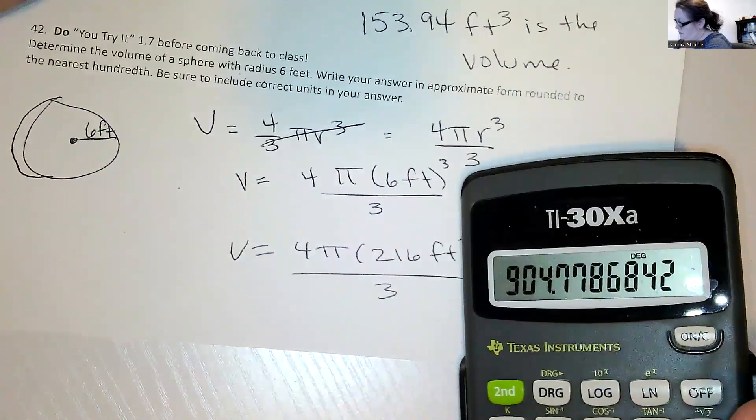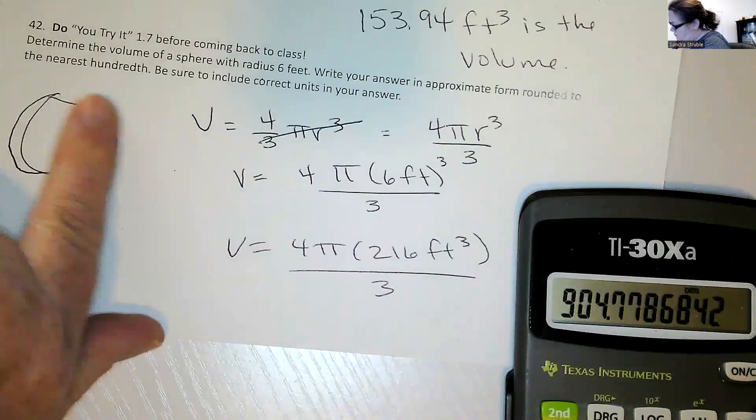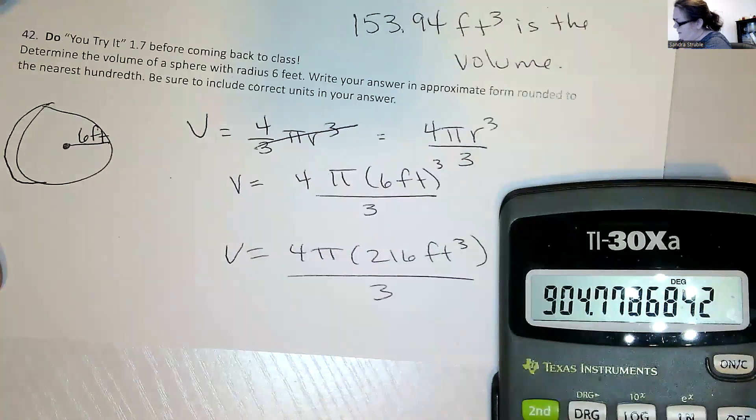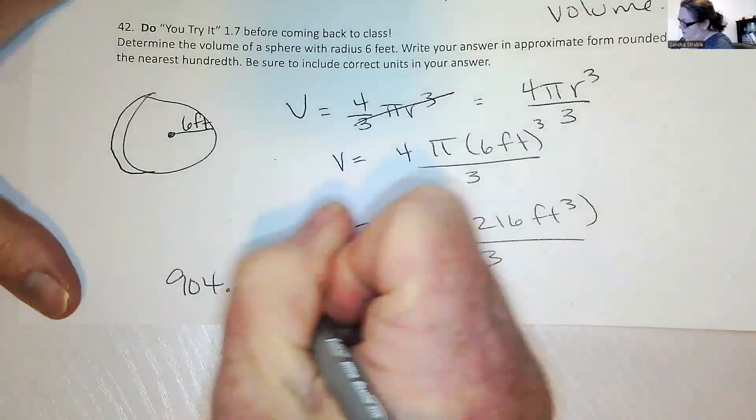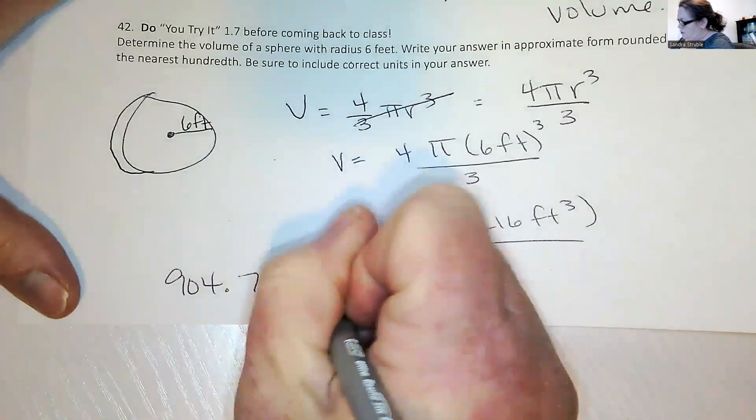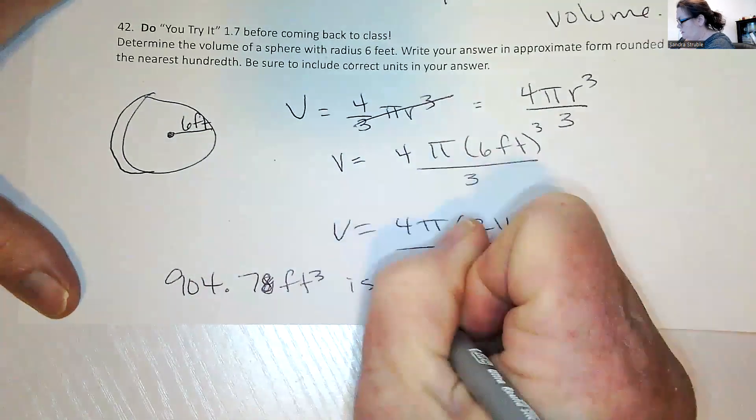I'm going to take that 216 times four times pi and divide it by three. So 904 point, how far are we going to? Hundredth. 904.78. That's an eight feet cubed is the volume.